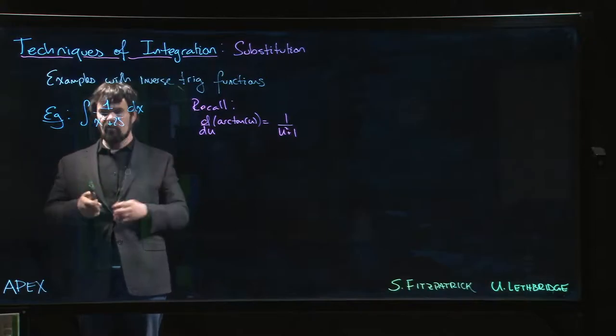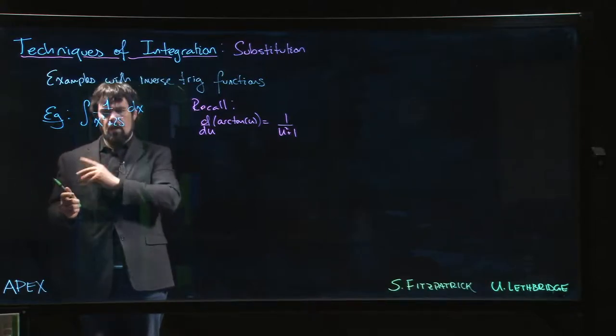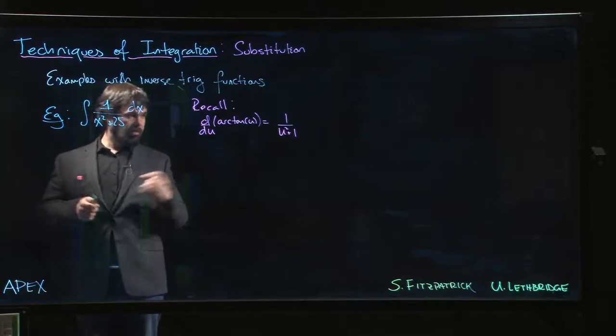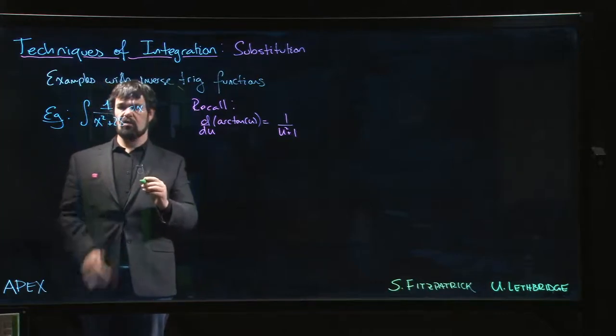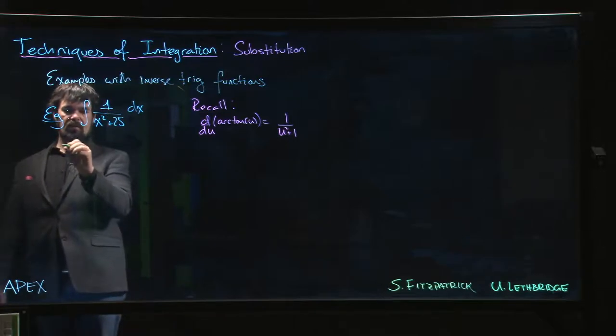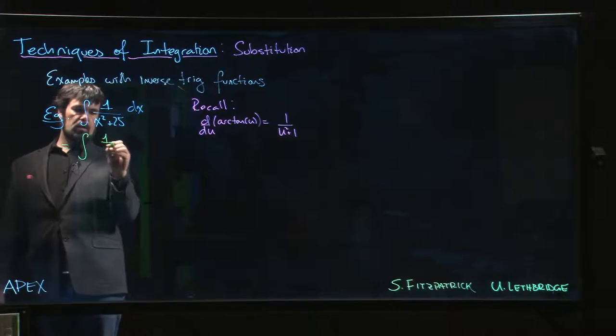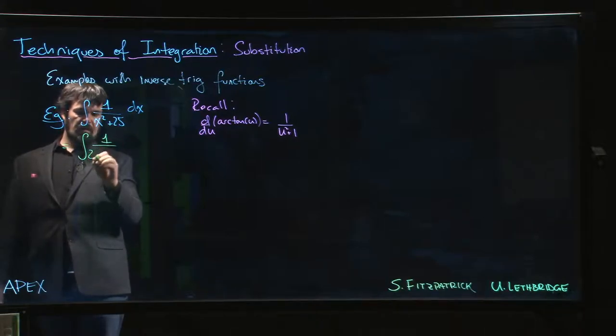Now we have something similar here, except we don't have x² + 1. If we had x² + 1, we'd jump right to the answer and say it's arctan(x). But we have x² + 25, so we have to think about how to adjust that. Well there's a simple trick that we can do. We can say that this is the same as 1 over—let's factor out a 25.